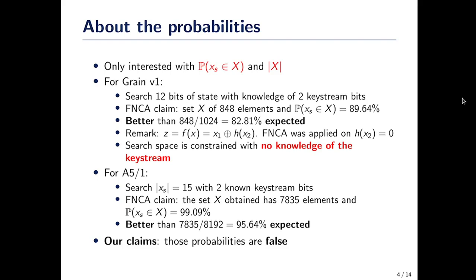The same thing is done with A5-1: basically they're searching for 15 bits of internal state with only the knowledge of two bits of keystream. The claim of the Fast Near Collision Attack is that the set X obtained after the self-refine method contains 7,835 elements and the probability that the good internal state is in the set should be more than 99%, which is better once again than what you would expect if X was taken at random.